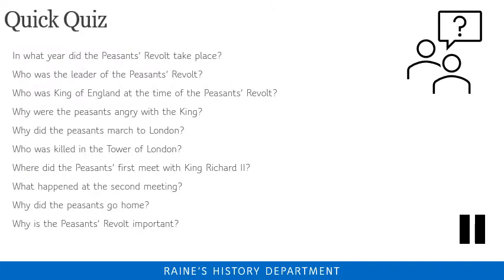Now time for the quick quiz. On your screen you'll see 10 questions. I want you to have a go at answering each of those questions. If you need to review the video, that's totally fine. Get a piece of paper and pen and write your answers directly onto it. This should take you around five minutes. Press pause now, then press play to find out the answers.